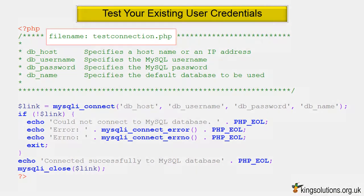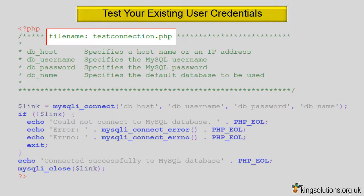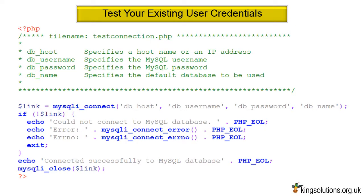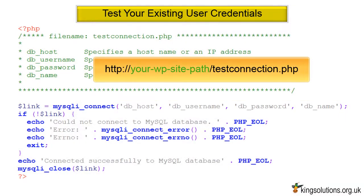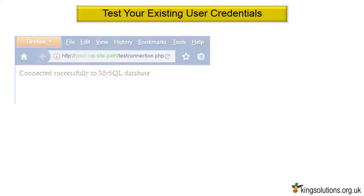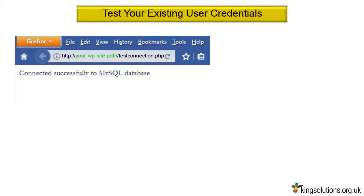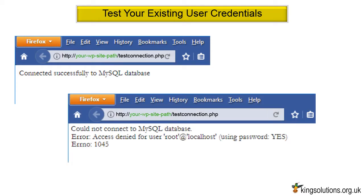Test your existing user credentials. Create a new file called testconnection.php containing the following code, and place it in your WordPress folder — the same folder where your wp-config.php file resides. I'll place all the code below the video for you to copy and paste; the code will also be available on our website. Change the dbhost, dbusername, dbpassword, and dbname to match your wp-config.php file settings before running. When you have done that, run the file in your browser. If you see the 'connected successfully' message, then that user has sufficient permission to connect to that database. If you see the 'could not connect' message, there is something else wrong — check for typos in both testconnection.php and wp-config.php. Getting the 'could not connect' message does not necessarily mean your MySQL server is down; it could mean your user does not have sufficient permission to access the database.